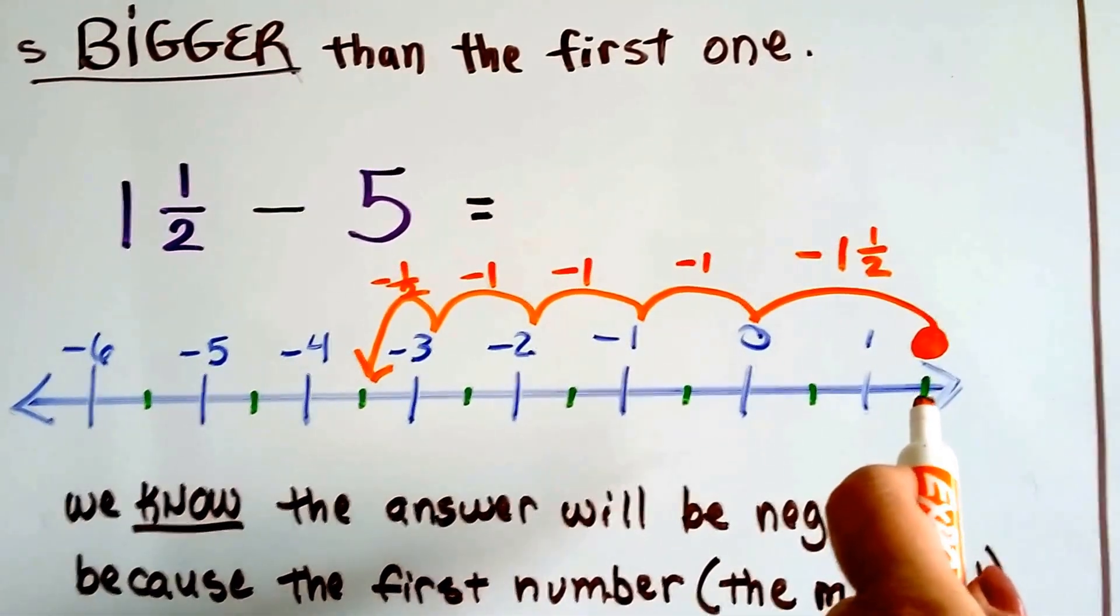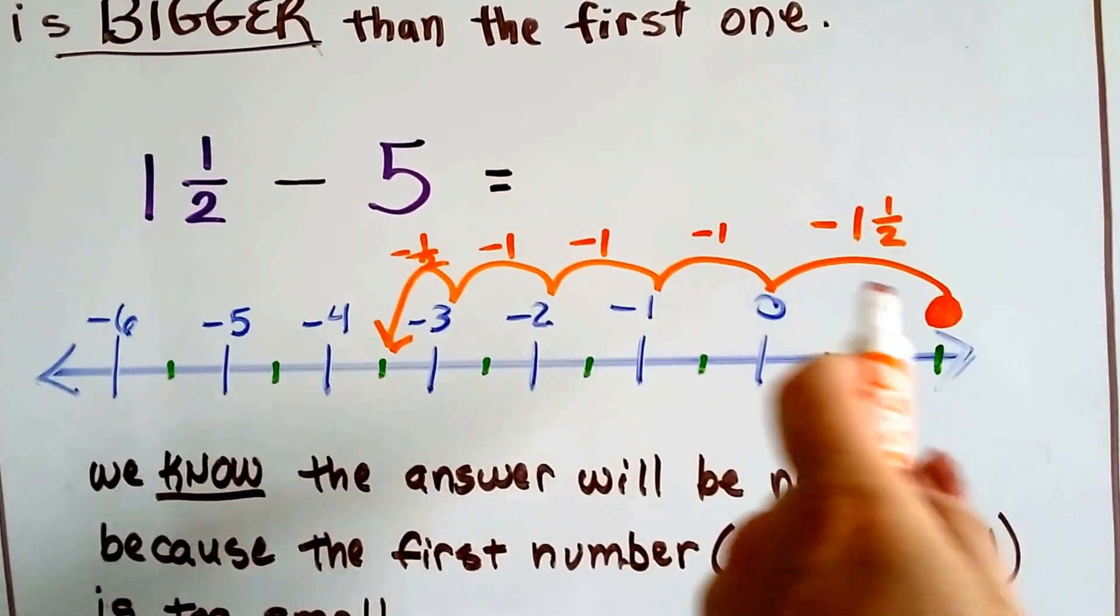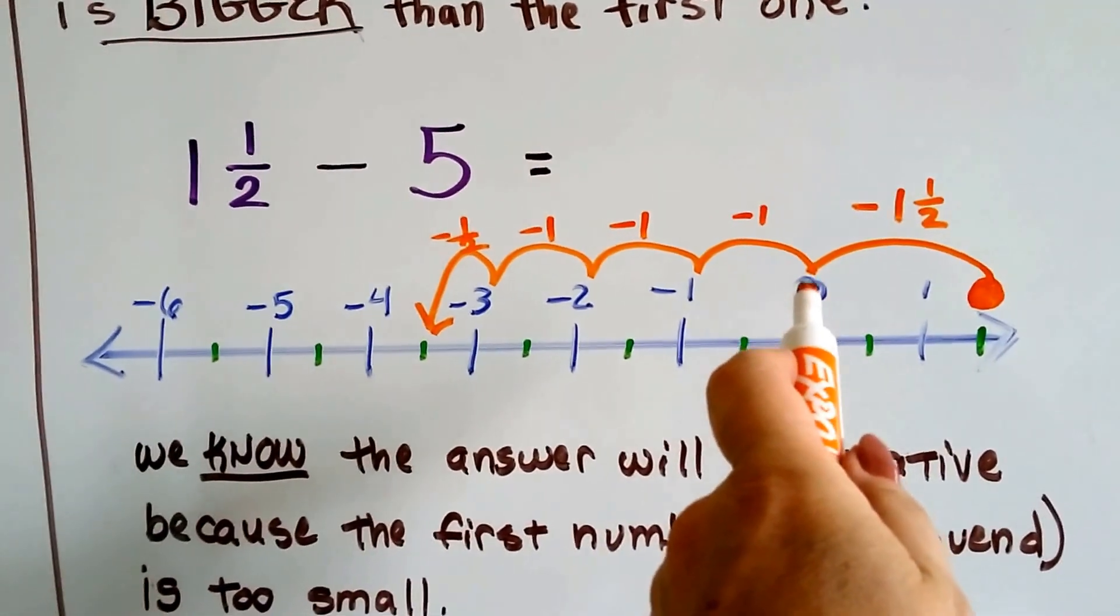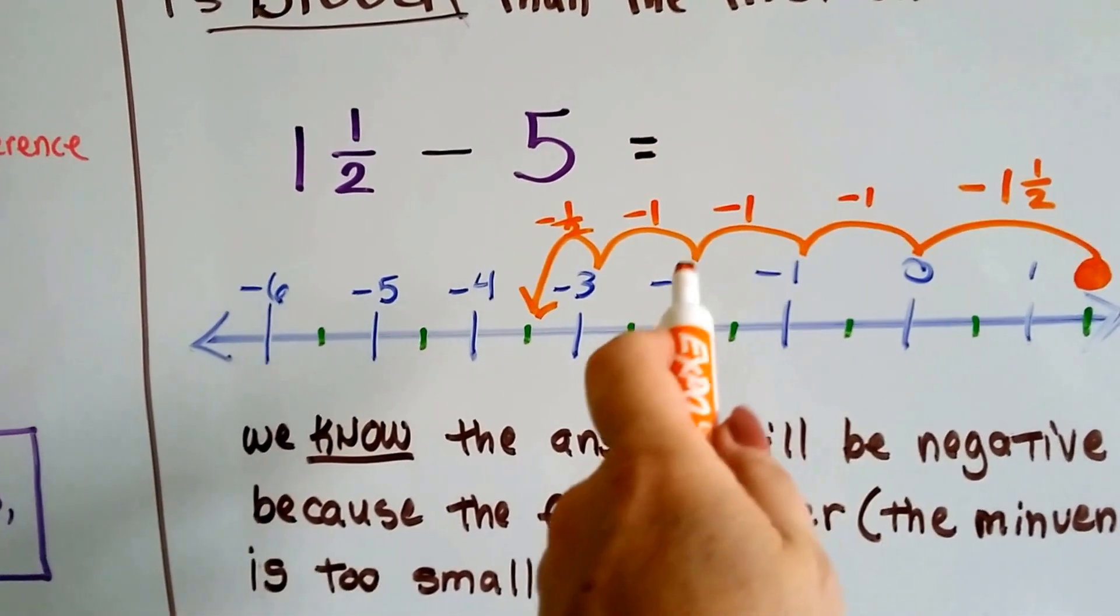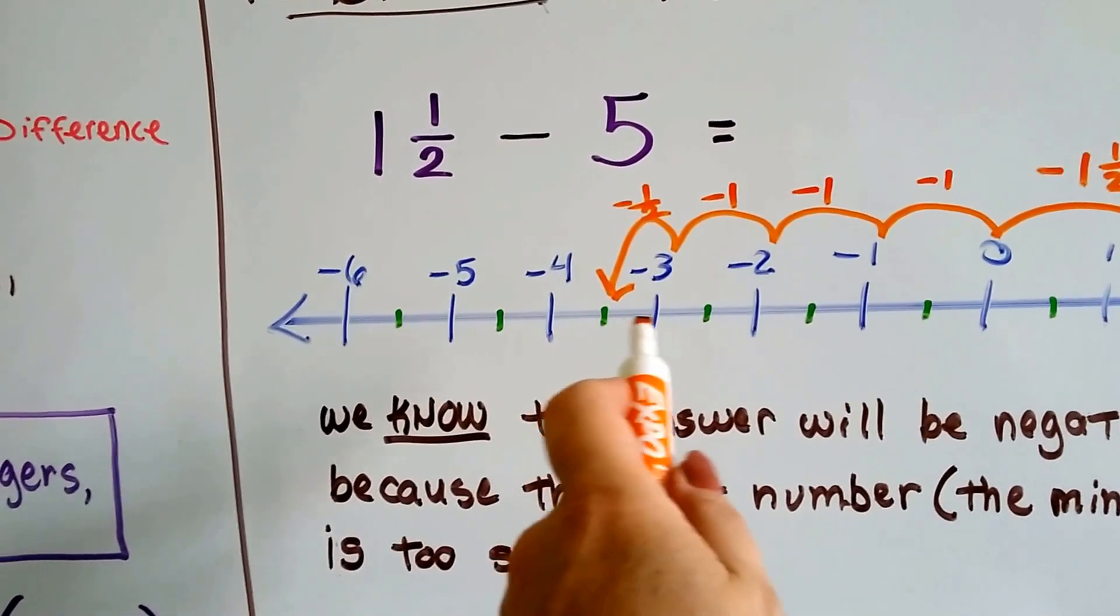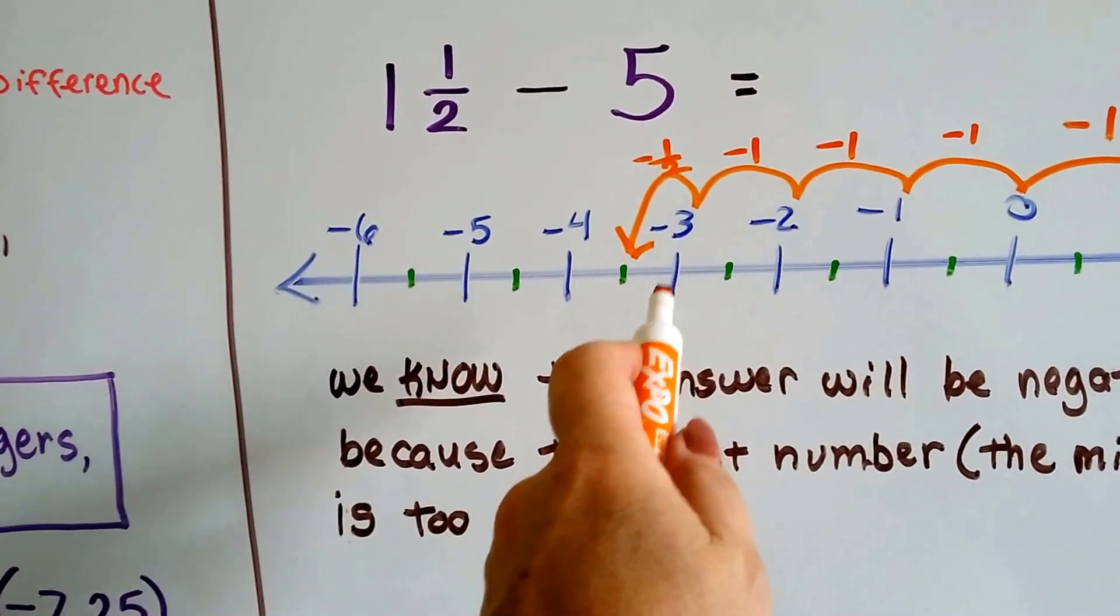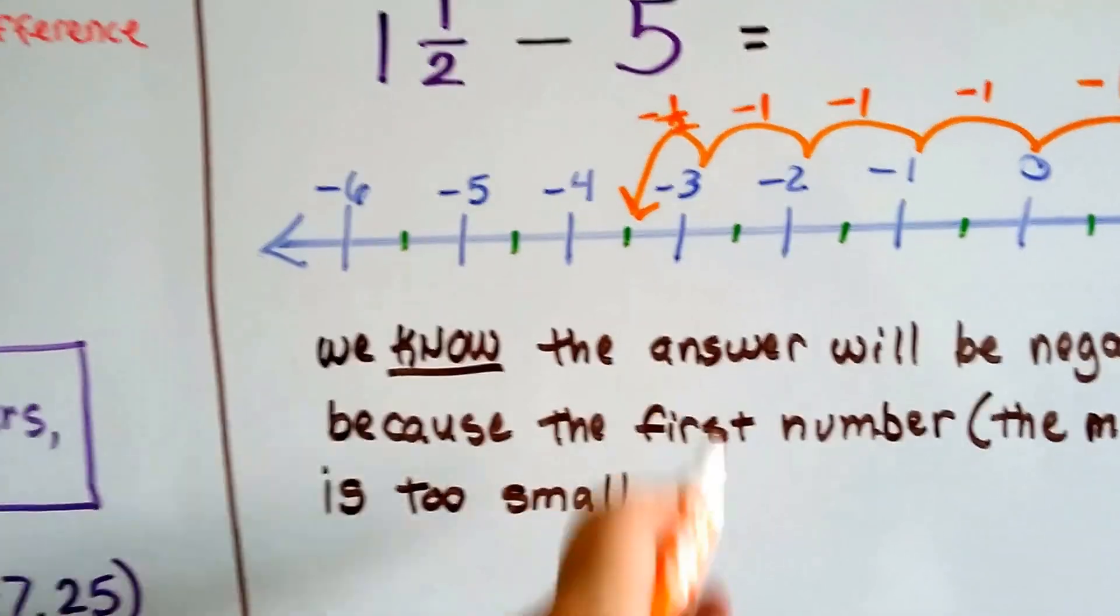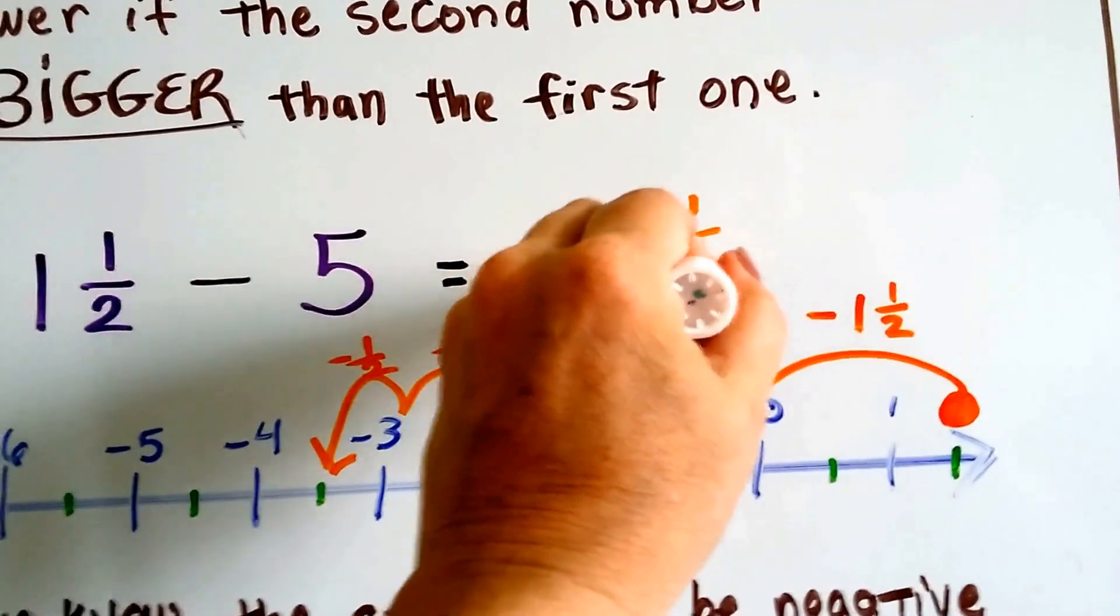And if we want to take 5 away, well, if we get back to 0, because this is 1.5, that will be 1.5. And if we jump to the negative 1, that will be 2.5, 3.5, 4.5, and then taking another little half, we'll be at 5. So now, because we're in between the negative 3 and the negative 4, we're at negative 3.5. So the answer is going to be negative 3.5.